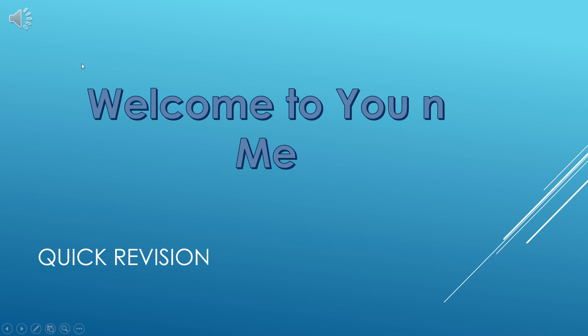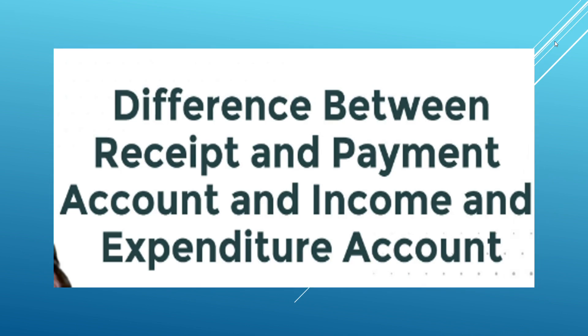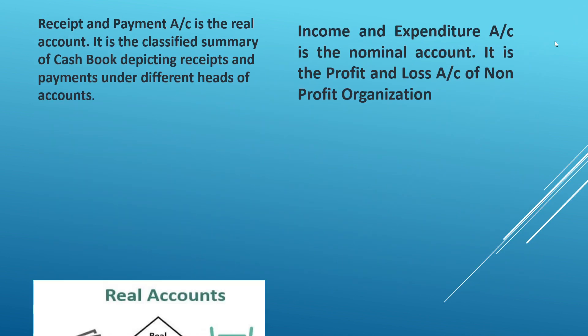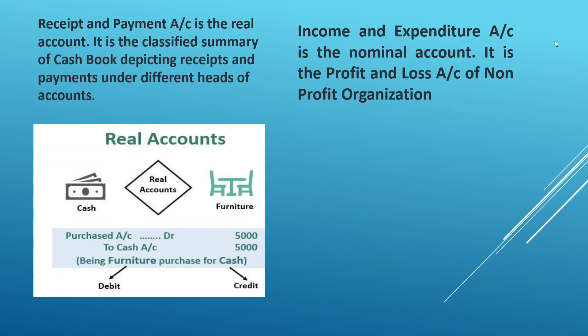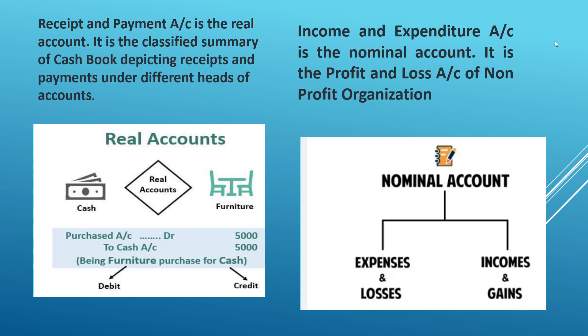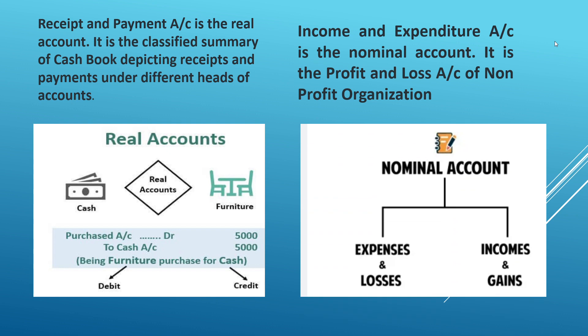Hello students, welcome. Today we are having a quick look at the difference between income and expenditure account and receipt and payment account, which is a very important topic for your final exams. Receipt and payment account is a real account — it is a classified summary of the cash book depicting receipts and payments under different heads. Income and expenditure account is a nominal account — it is the profit and loss account of a non-profit organization.